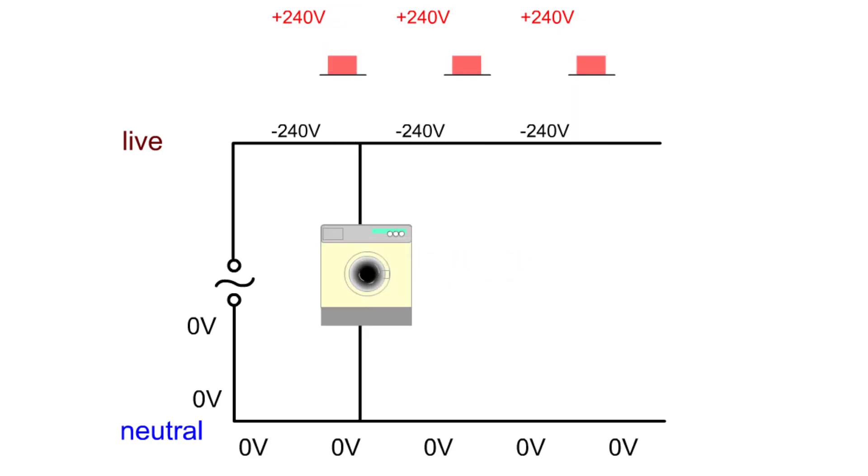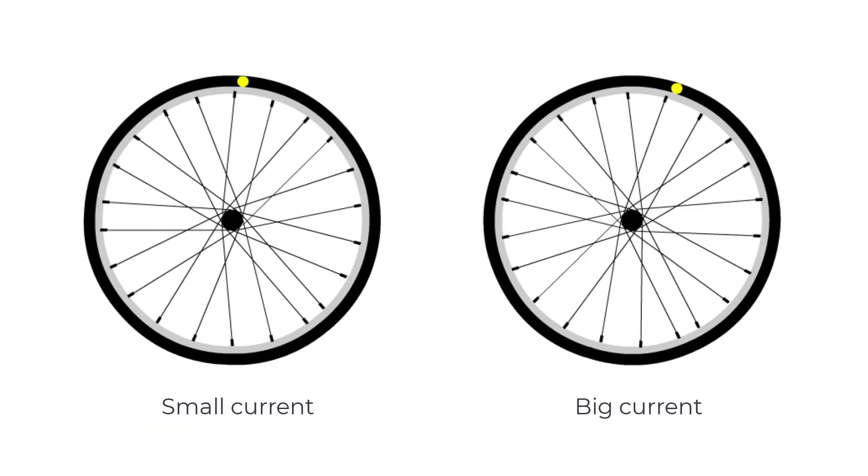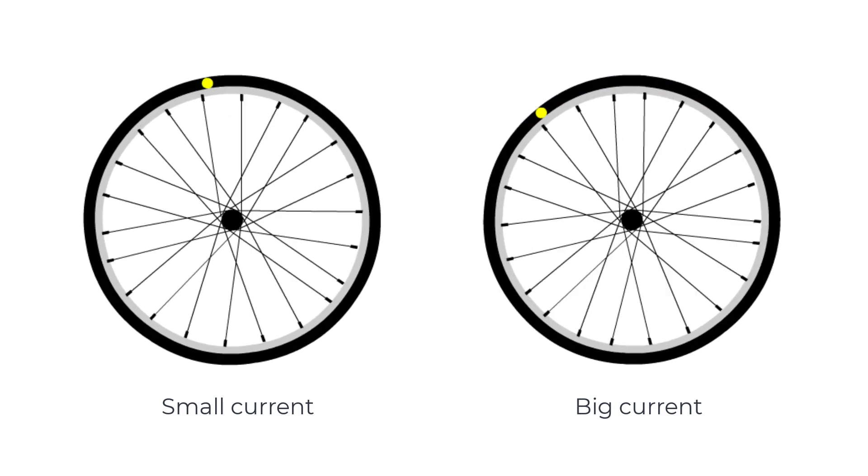Domestic appliances are connected in parallel with the mains. This means the full mains voltage is across them and turning one thing off doesn't turn everything off. The more appliances you connect, the more current is drawn from the mains. This is like the wheel making bigger oscillations but at the same rate, still 50 Hertz.